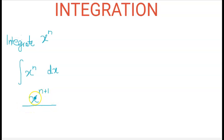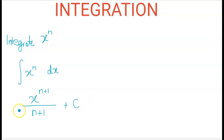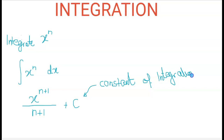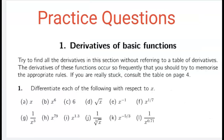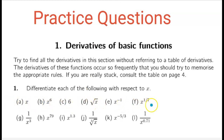When we differentiate a constant it becomes zero, so when we go the other way, a constant appears in integration. We don't know the value of this constant — it can be any real number, positive, negative, or zero. This is known as the constant of integration, written as C, and it will appear every time.